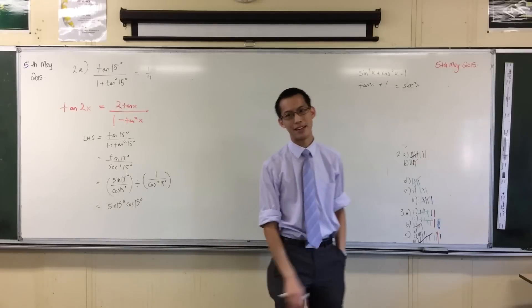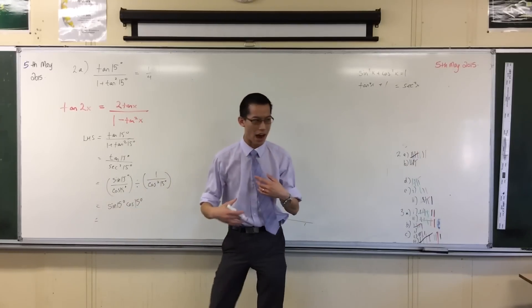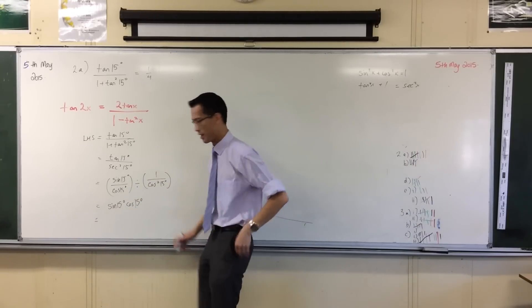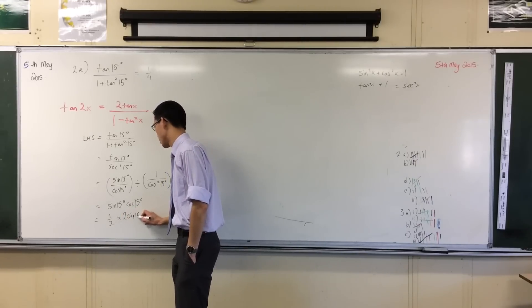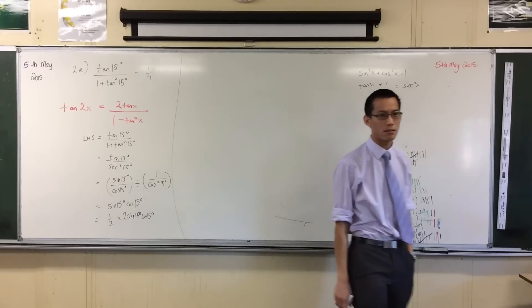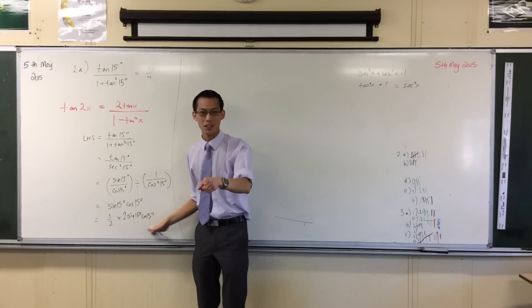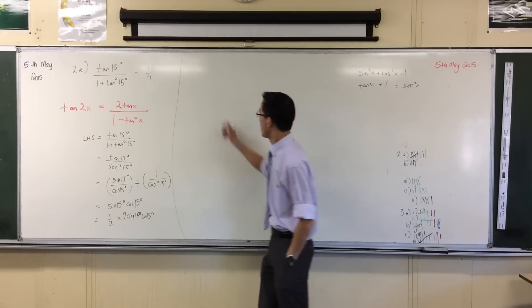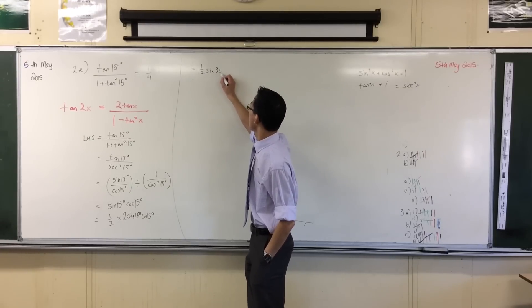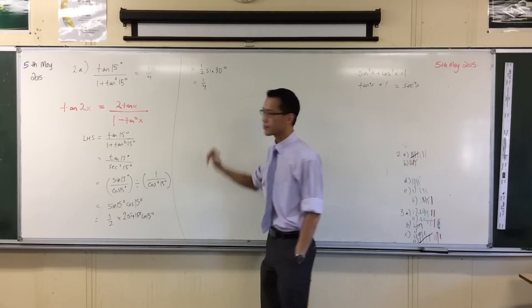And this we should recognize. This is not a line of working I would write down, but just so you can see what my brain is doing - this is half of double sine 15 plus 15. Why did I bother putting a half and a two out the front? So that I can get the double angle result in here. 2 sine x cos x, that's sine 2x. So I can go straight to that thing, half of sine 30, that's half of half, which is a quarter.